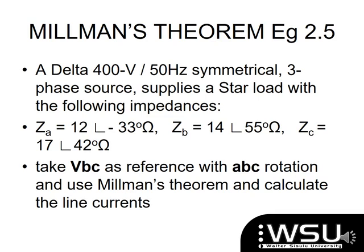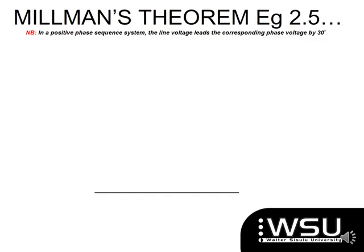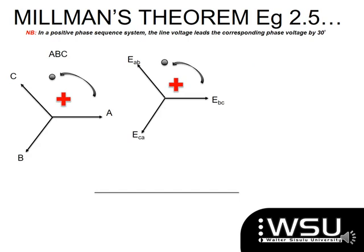The second example uses the same theorem. Again we have a delta source connected to a star load, with 400 volts given as the reference VBC, and this time it is ABC rotation — a positive phase sequence. I start by drawing the ABC phasor sequence, mark in the given line voltages with the reference point, then draw in the phase voltages. For a positive phase sequence, the line voltage leads the phase voltage, so the phase voltage is drawn below or behind the line voltage.